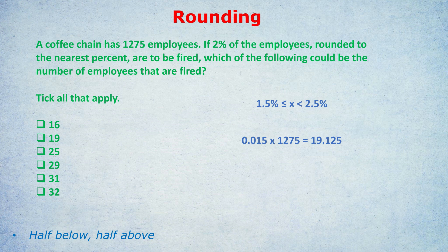So answers A and B — 16 and 19 — are too low. For the upper bound, using the 2.5% figure: 0.025 times 1,275 is 31.875. But that exact number is not allowed since it has to be less than 2.5%, so anything less than 31.875 is allowed. That includes 31, 29, and 25. The correct answers are 25, 29, and 31 — they're above 19.1 and below 31.875.